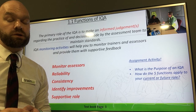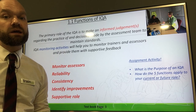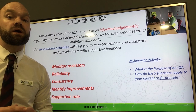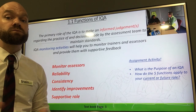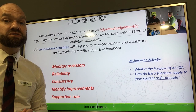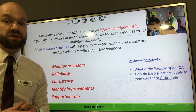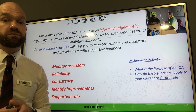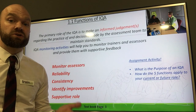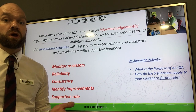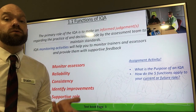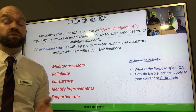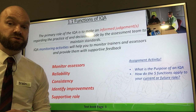Criteria 1.1 is looking at the functions of an IQA. Essentially an IQA is there to make informed decisions about the assessment process. An IQA is there to promote standardisation between a team of assessors, trainers, and colleagues who are involved within this assessment process or involved within providing feedback to learners.